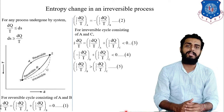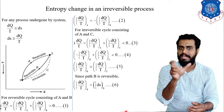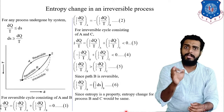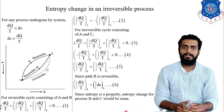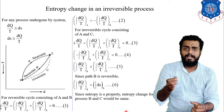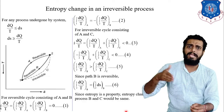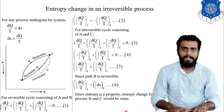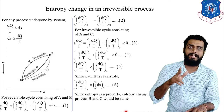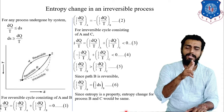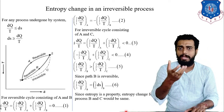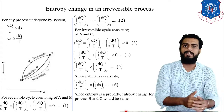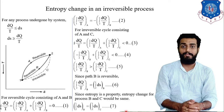Interestingly, dS is the change in entropy, which is a point function because entropy is a property. A point function does not depend on the path followed. That means whether you take path A, B, or C, the entropy change from 2 to 1 remains the same. Therefore, the entropy change along path B equals the entropy change along path C — that is equation number 7.